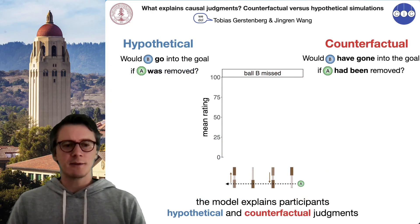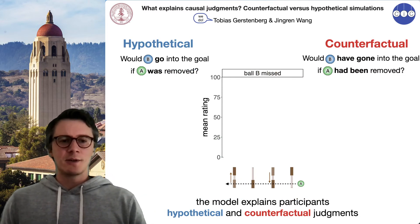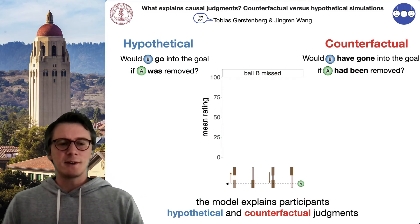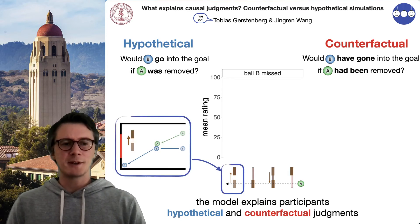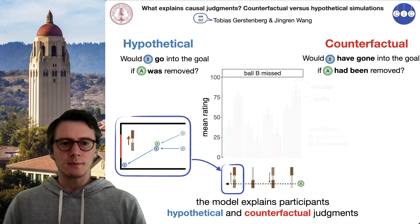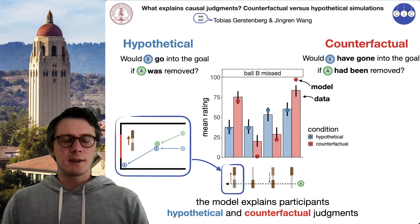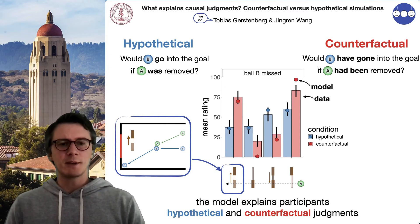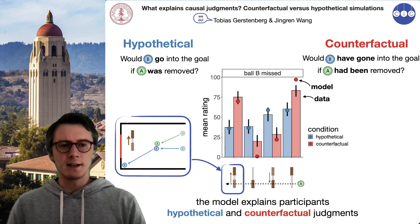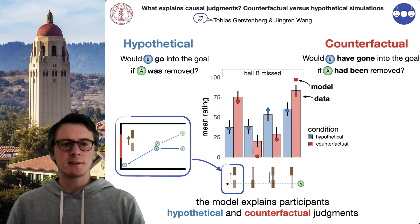Here I'll show results for some of those clips. On the x-axis, I show different situations that differ in terms of the initial position of the block and whether or not it moved — for example, one where the block was initially in the way but then moved out of the way. The data are the bars and the circles are the model predictions. We see that model predictions and data are closely aligned, and that hypothetical judgments are mostly affected by the initial position of the block, whereas counterfactual judgments are mostly affected by the final position of the block.